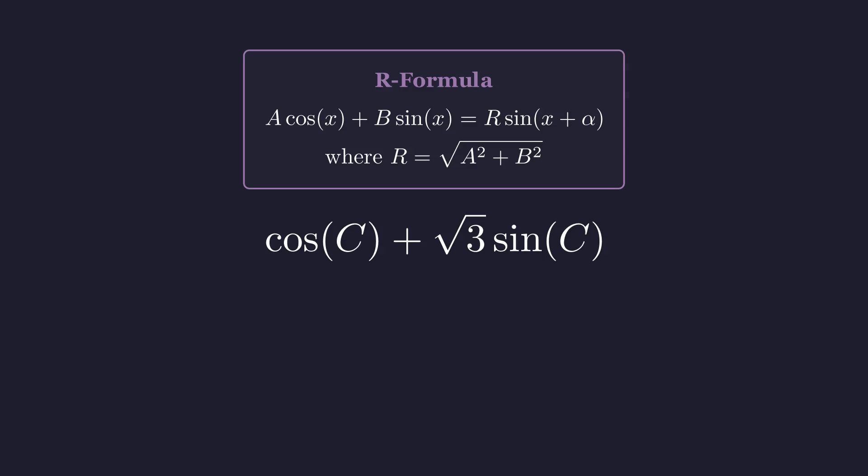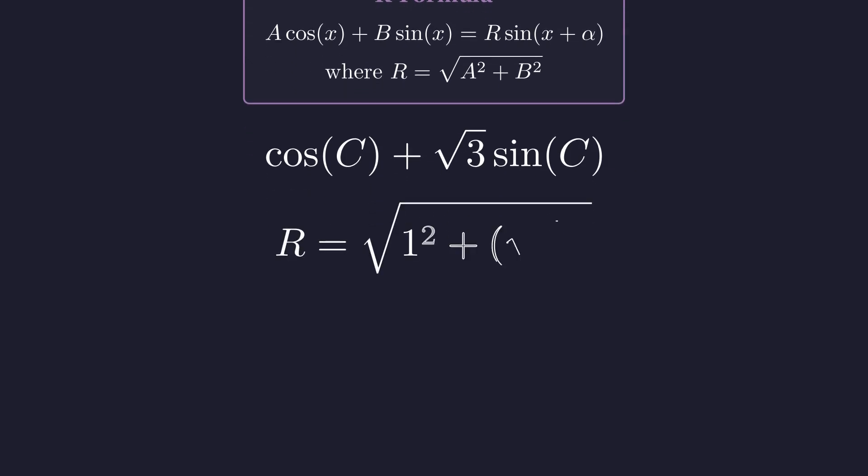For our specific expression, we have A equals 1 and B equals the square root of 3. Let's see what R turns out to be. To apply the R formula, we need to calculate R using A equals 1 and B equals the square root of 3.